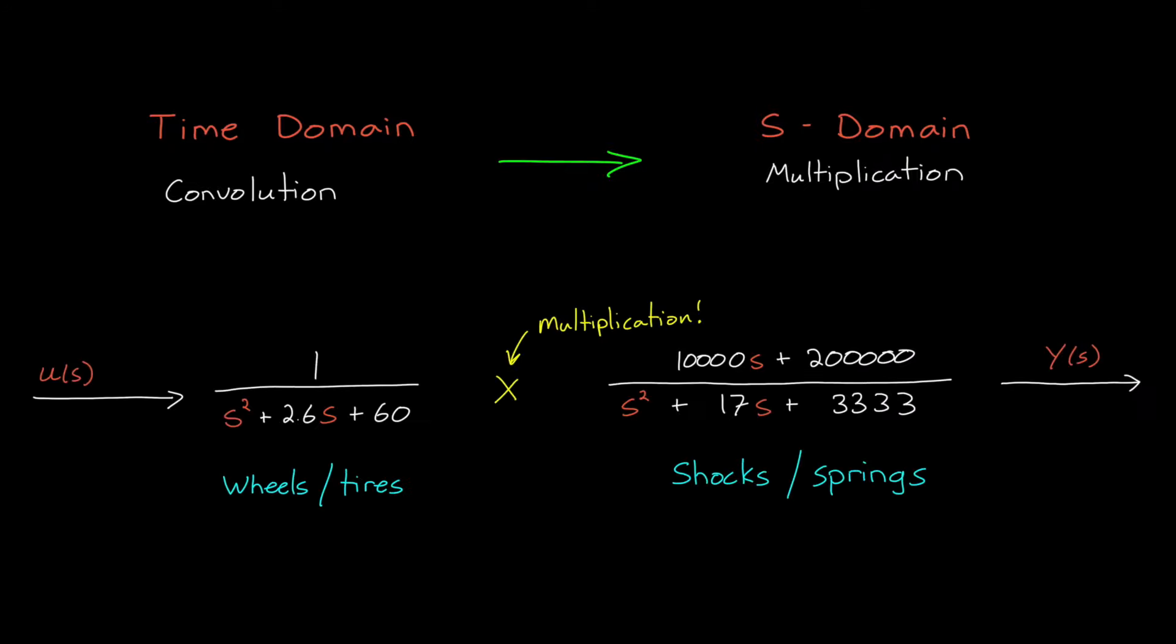On the other hand, convolution in the time domain becomes multiplication in the s domain. Therefore, to combine the equivalent two transfer functions in series, we just have to multiply them. And I think we can agree that polynomial multiplication is easier than convolution.